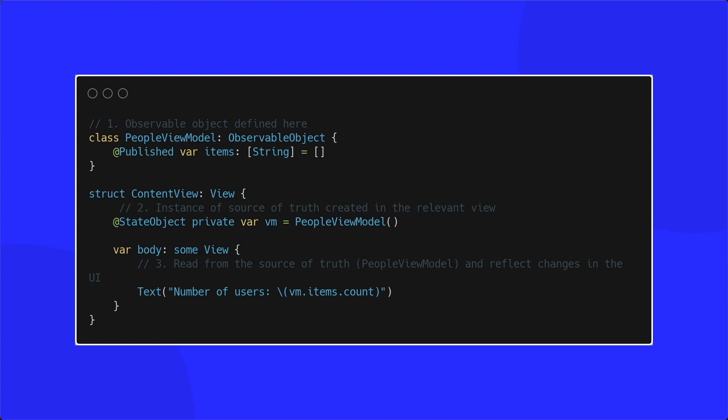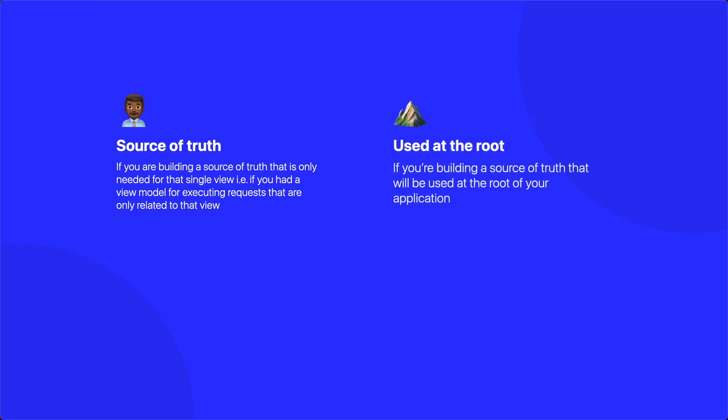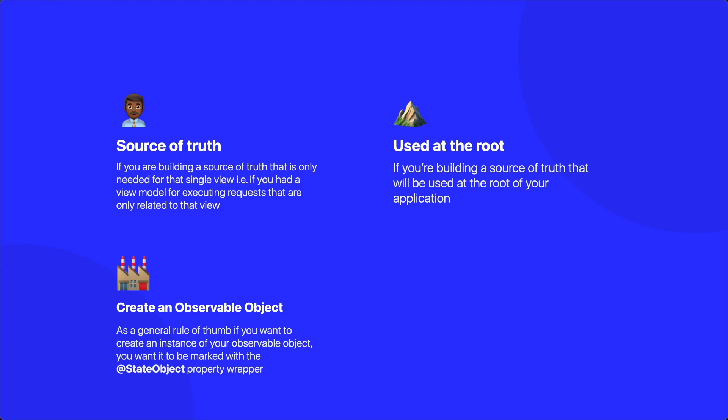When working with state object, the general principles to follow are: if you're building a source of truth that is only needed for a single view — for example, a view model for executing requests related only to that view — then this should be a state object within that view. Also, if you're building a source of truth used at the root of your application, such as a view model for managing a user session, you also want this created using the state object property wrapper. As a general rule of thumb, create instances of your observable objects using the state object property wrapper.